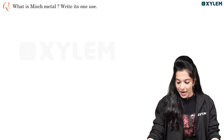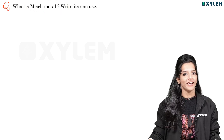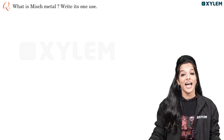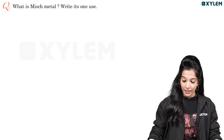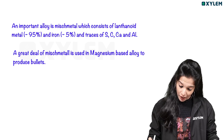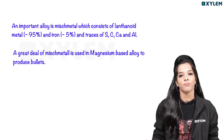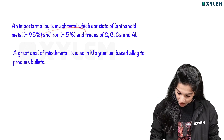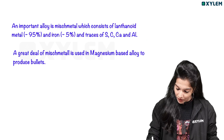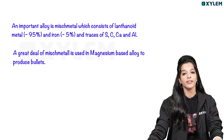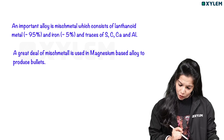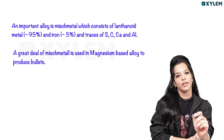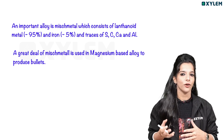What is misch metal? It is an alloy. An important alloy called misch metal consists of lanthanoid metals — 95% of misch metal is lanthanoid metals. Then there is a small amount of 5% iron, and a trace of sulfur, carbon, calcium, and aluminium. A great deal of misch metal is used in magnesium-based alloys to produce bullets.